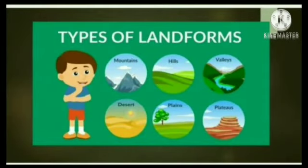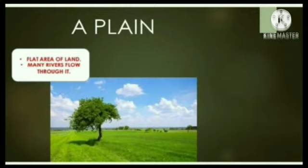The eight planets are Mercury, Venus, Earth, Mars, Jupiter, Saturn, Uranus and Neptune. Our Earth is the only planet in the solar system which has life. Life is possible on Earth just because of the presence of water, oxygen and the right temperature.